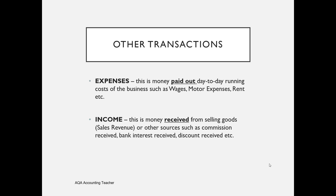Try not to confuse income with liabilities — they're both credit balances in our double entry system. Income is earned income, while liabilities are amounts owed by the business. So although a loan will result in money coming into the business, it hasn't been earned — it's been borrowed — so it's classed as a liability rather than income. We'll see more about the importance of distinguishing between these as we go on.